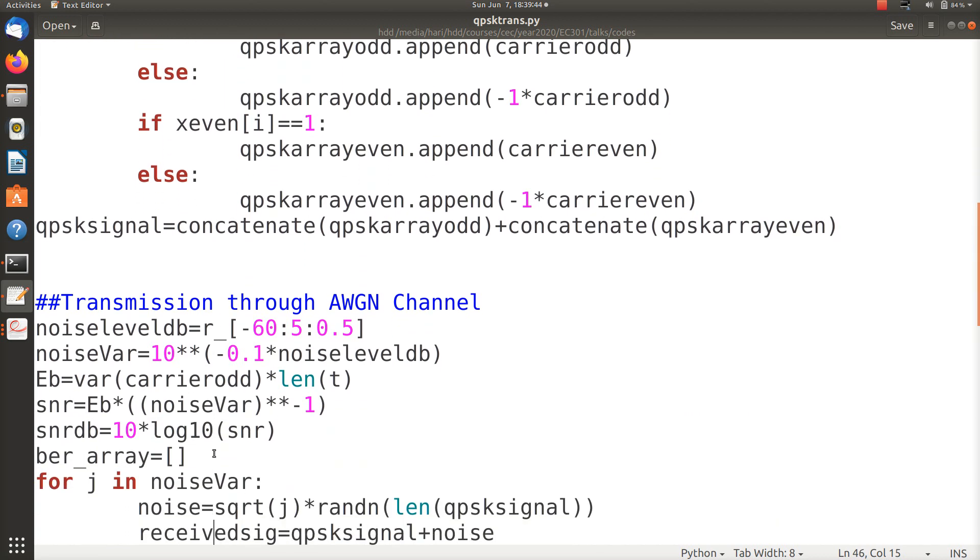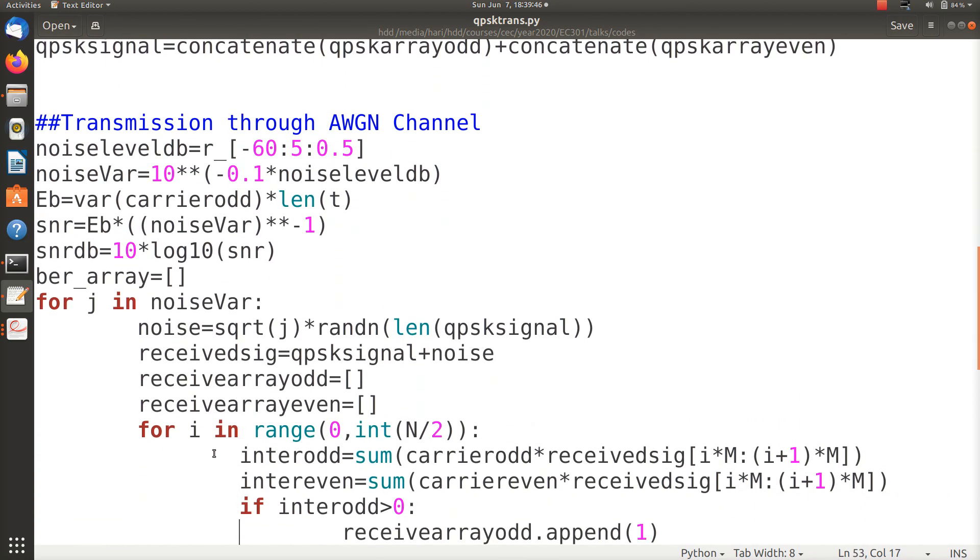Now you have to think about that it goes in a noise channel. For this, as I did in the previous case for the BPSK receiver, I assume that the noise level in dB is from minus 60 dB to say 5 dB, and I compute the noise variance that must be 10^(-0.1*noise_level_dB). Then I compute the energy of the bit and I compute the signal to noise ratio and I compute the value in dB.